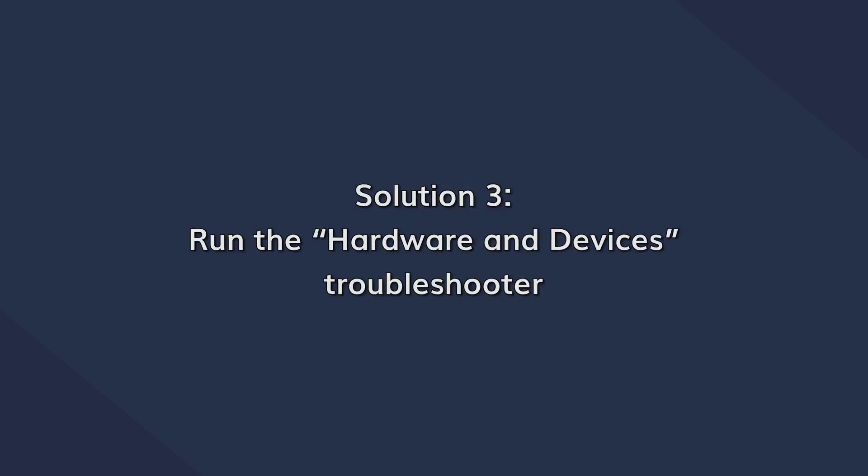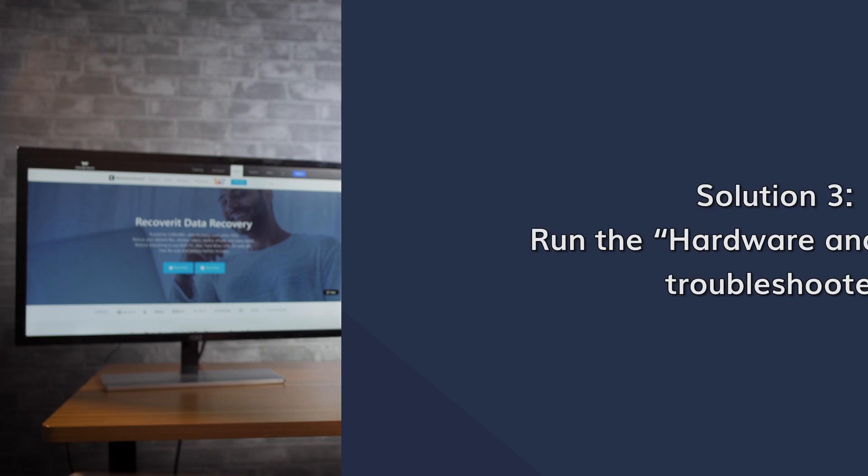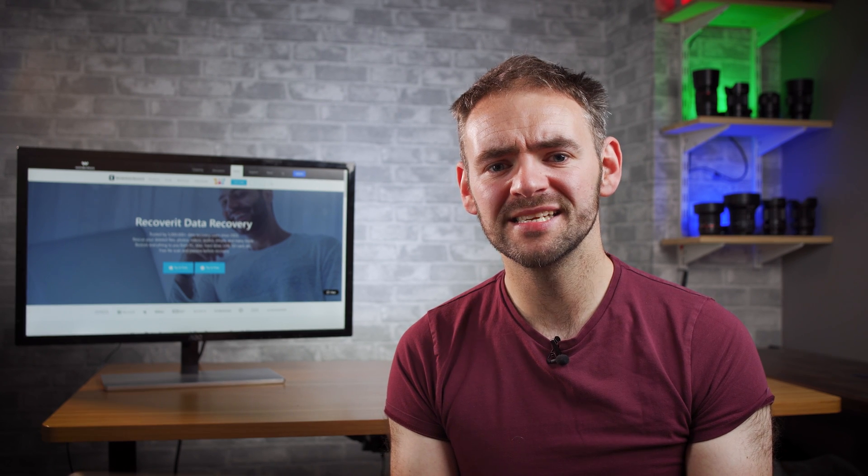If you're still unable to connect your serial devices to your PC after this, we'd now recommend you try running the Hardware and Devices troubleshooter. Windows has a built-in troubleshooting mechanism designed to diagnose and fix system errors. So if the previous two steps haven't worked, you can try running the Hardware and Devices troubleshooter to see if that fixes the problem.